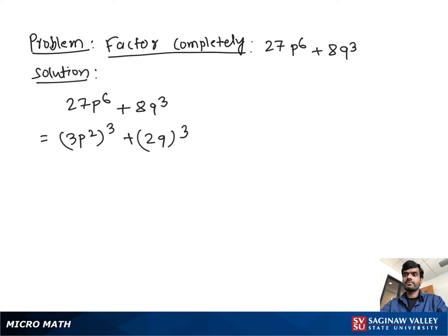We know A^3 + B^3 is equal to (A + B)(A^2 - AB + B^2). If we suppose 3P^2 as A and 2Q as B...